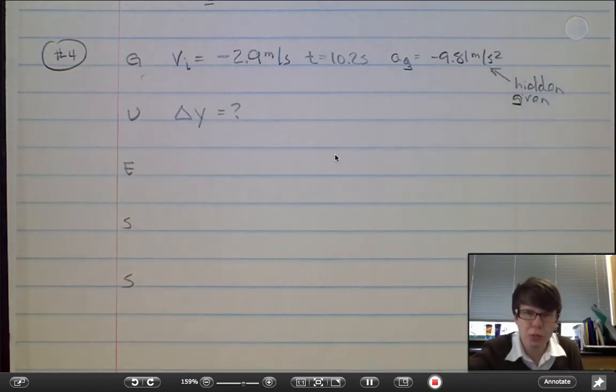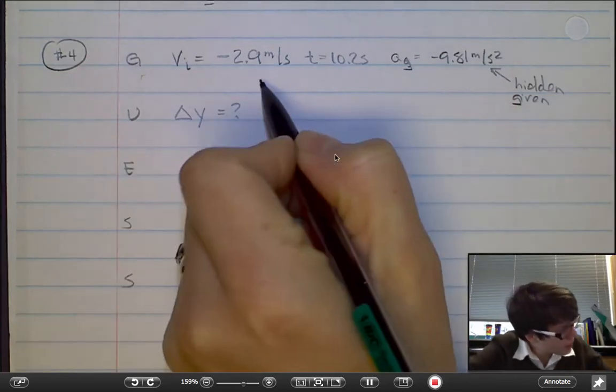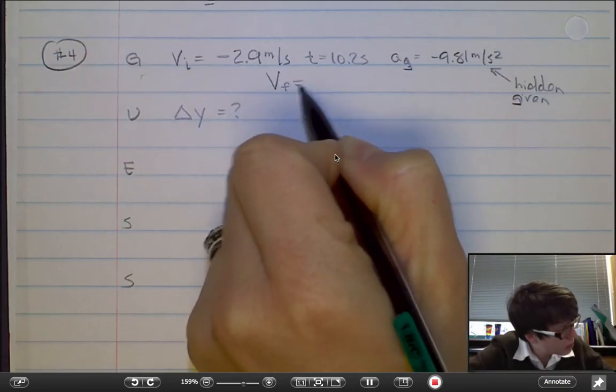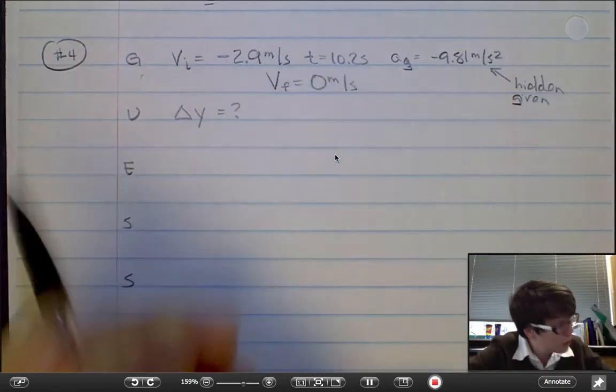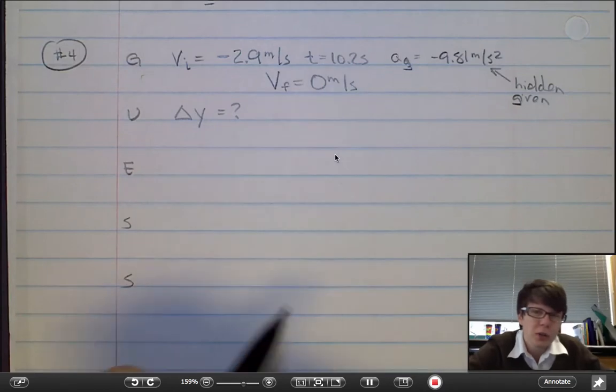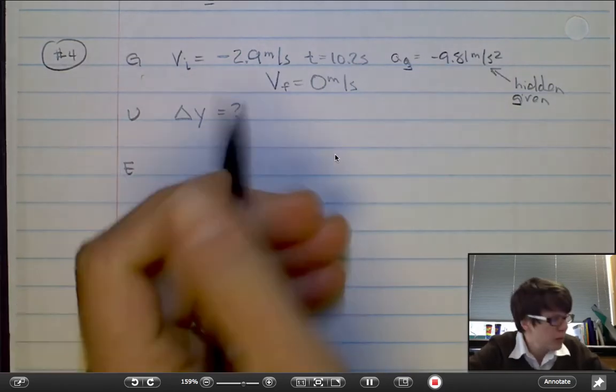You may safely assume that this is a freefall problem, mostly because we don't know how to do anything but freefall problems. It might be tempting here to try to say that the final velocity of the rock is zero. But that would actually be incorrect. I've seen a few students make this mistake.